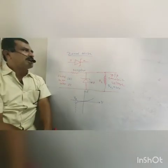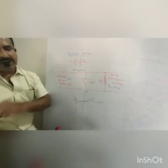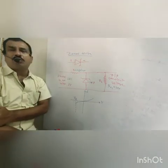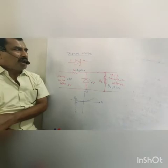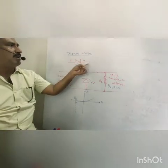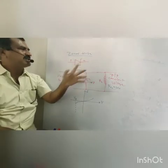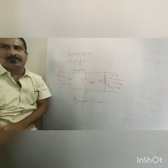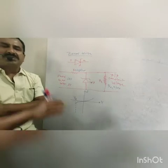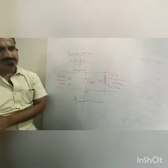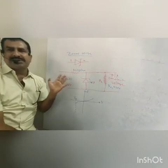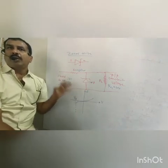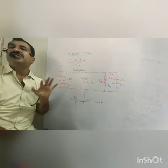The first one is the Zener diode. This diode was invented by C. Zener, so it is called by his name, Zener diode. This is the circuit symbol of this Zener diode. It is a specially designed diode which operates in the breakdown voltage region continuously without being damaged, and that is called the Zener diode.